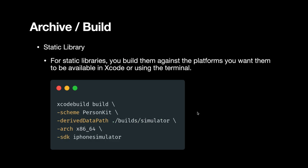If you're creating an XCFramework for a library, you just build your library. If you're building for the simulator, the device, or Mac, you use xcodebuild build in the terminal and pass in the scheme, the derived data paths, the architecture, and the SDK. For the simulator, the architecture is x86_64 and the SDK is iphonesimulator.